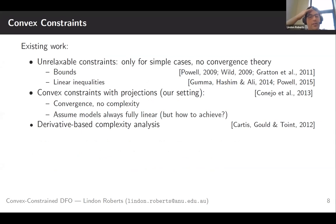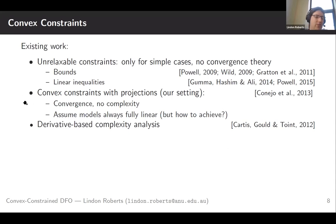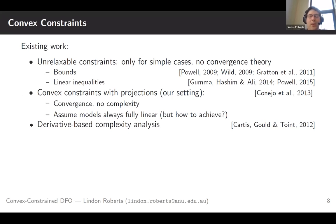There's a little bit of work that's been done in this setting. In the case of unrelaxable constraints — where your algorithm has to be strictly feasible — people have looked at some simple examples like bounds and linear inequalities, but really that's only been around algorithm development; people haven't been able to prove anything rigorous about that. Closest to what we're doing is work from about eight years ago that looked at exactly our setting — convex constraints with projections in a derivative-free setting — where they proved convergence but not rates, but had the quite severe limitation that every time you built a model it was assumed to be fully linear. As we'll see in a second, that's not necessarily achievable in practice.